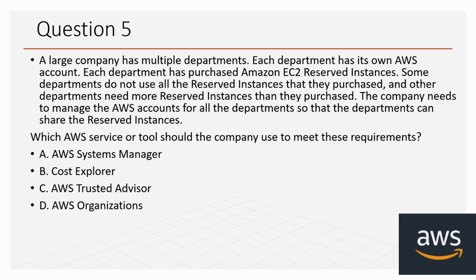The options are AWS Systems Manager, Cost Explorer, AWS Trusted Advisor, and AWS Organizations. The correct option is AWS Organizations. It helps in managing accounts and generating consolidated bills — the master account gets a consolidated bill for all member accounts. You can also get volume pricing discounts and apply service control policies at the organizational level.